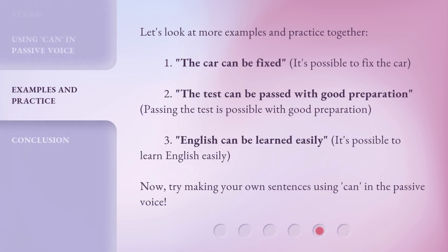Let's look at more examples and practice together. 1. The car can be fixed — it's possible to fix the car. 2. The test can be passed with good preparation — passing the test is possible with good preparation. 3. English can be learned easily — it's possible to learn English easily. Now, try making your own sentences using can in the passive voice.